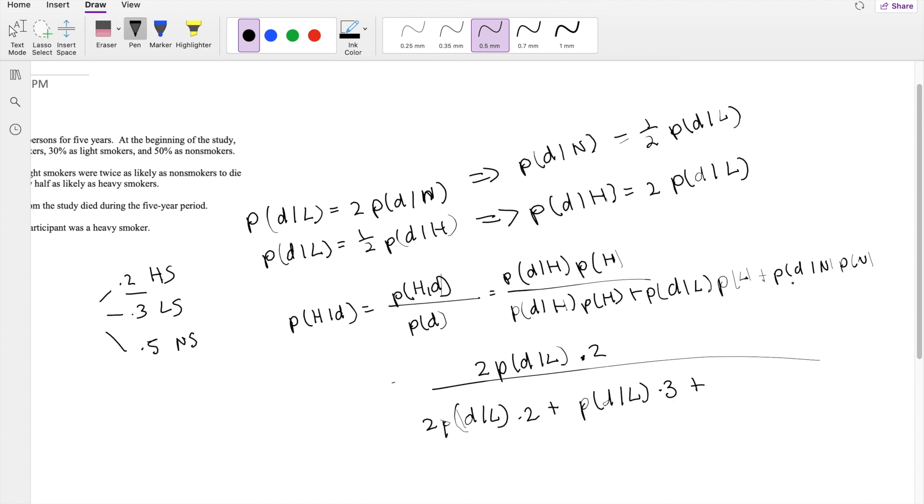And lastly, right here, probability of D given N—D given N is one-half times the probability of D given L, times the probability of normal, that's 0.5.